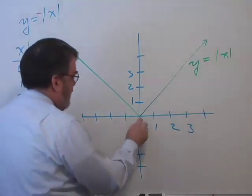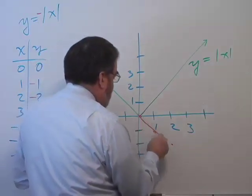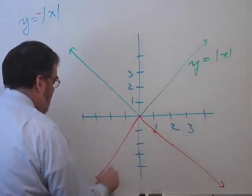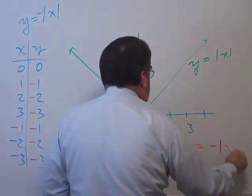So let me draw the graph. I'll do that in red. And it just flips it over, y equals minus absolute value of x.